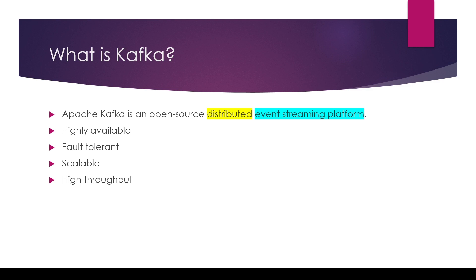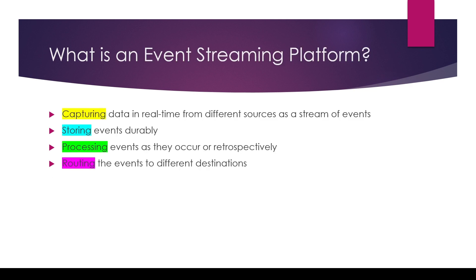Next, notice the keyword 'event streaming platform.' To understand what this is, we need to understand four key characteristics. Number one: an event streaming platform can capture data in real time from different sources as a stream of events. These different sources can be a database, a different microservice, an IoT sensor, or anything producing data.